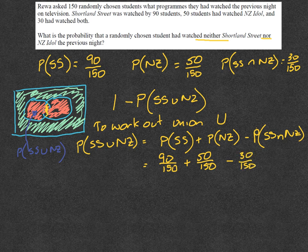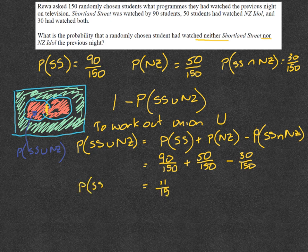And we work that out. And when you do that on your calculator, that comes out at 11 fifteenths. So the probability of the Union between those two, SS and NZ, is equal to 11 fifteenths.